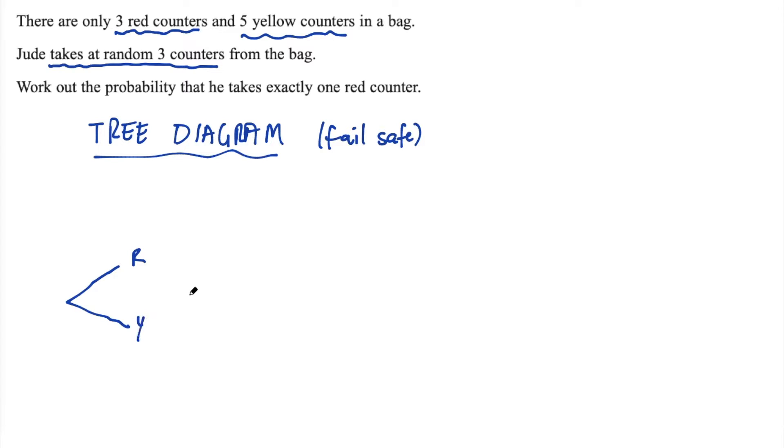That means each section of the tree diagram needs two branches. So we're going to start off with two branches. One is red and one is yellow. And then we need to do this twice more, because again, we're taking three picks. So the second branch is going to be again, red and yellow. And then the third one, again, red and yellow. And this might not be the quickest method, but it's going to save you in those times where you might have had a brain freeze or you might not be completely confident with this subject.